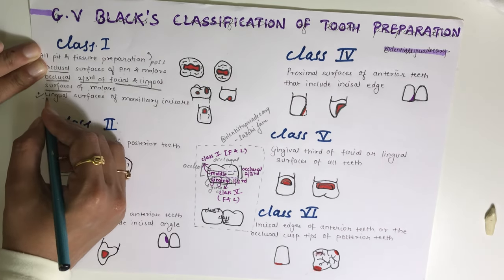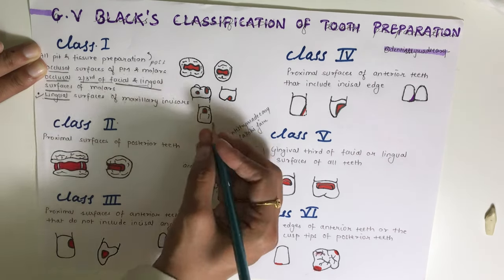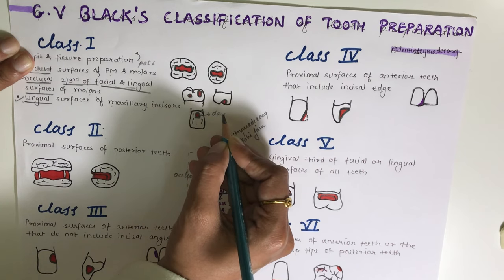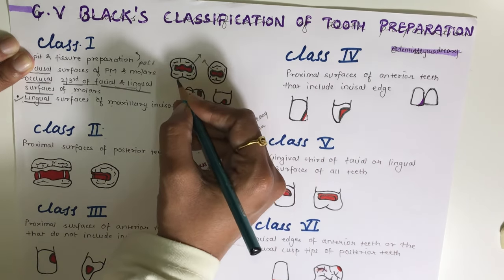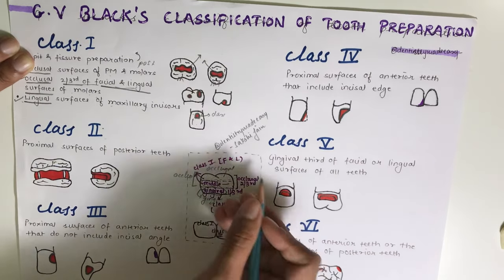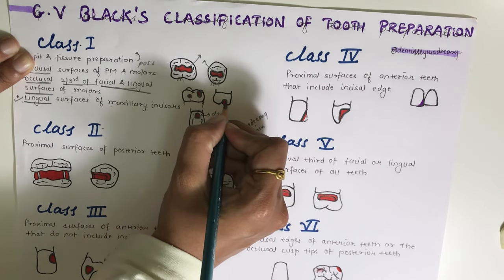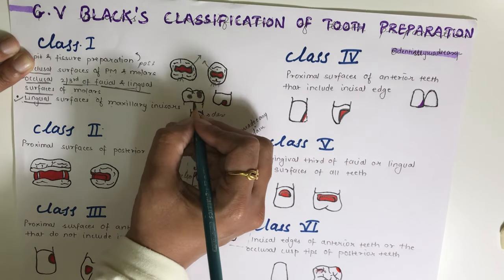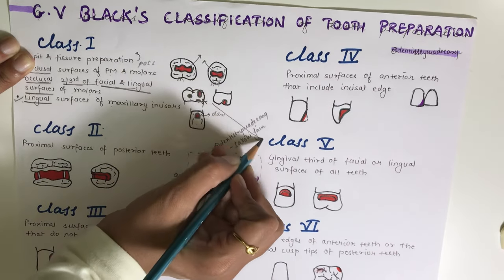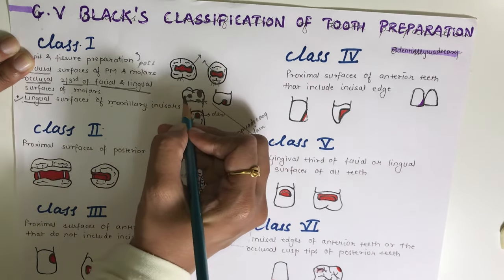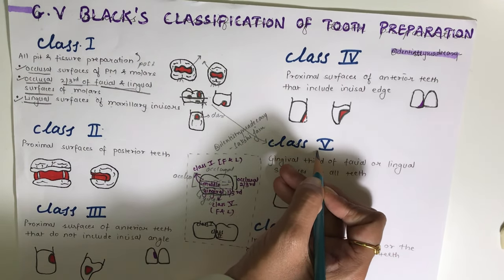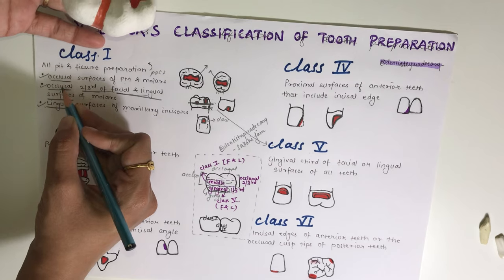The third location in Class 1 is the preparation done on the lingual surface of the maxillary incisors. An important point to remember: up to the occlusal two-thirds it is Class 1, but when the caries extends into the gingival third, it will fall into Class 5. So the gingival third is not Class 1.